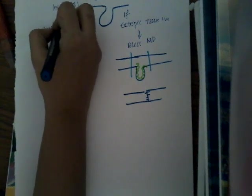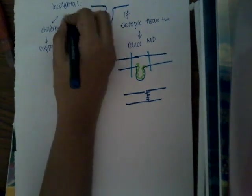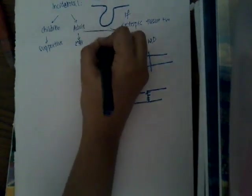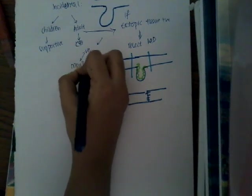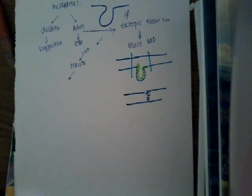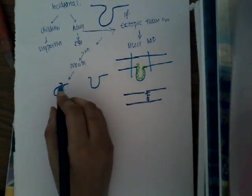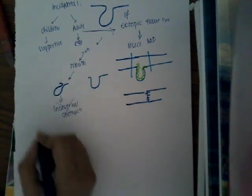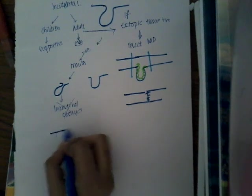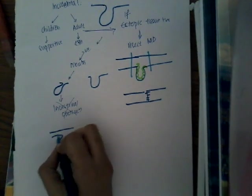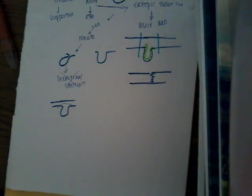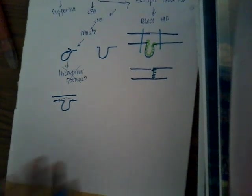If found incidentally in children with no ectopic tissue, supportive therapy is given. In adults found incidentally, if there is no ectopic tissue, assess the mouth of the diverticulum: if the mouth is wide, it can be left safely; if the mouth is narrow, it risks intestinal obstruction and should be excised. Diverticulectomy can be performed, though complete resection is preferred to avoid leaving ectopic tissue.